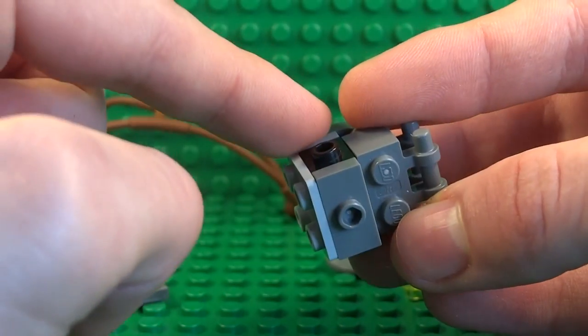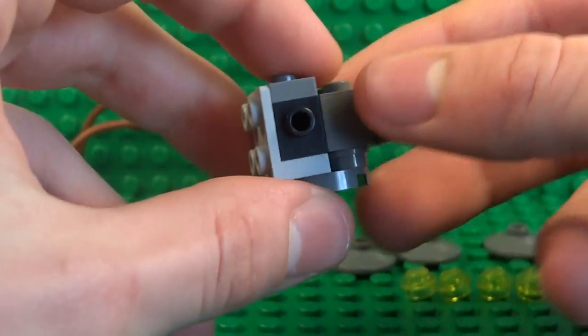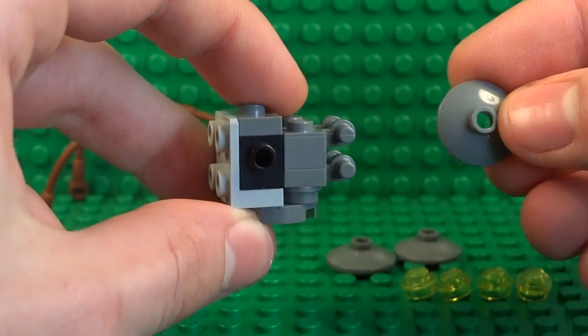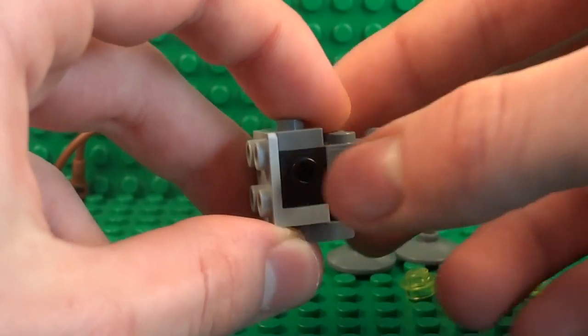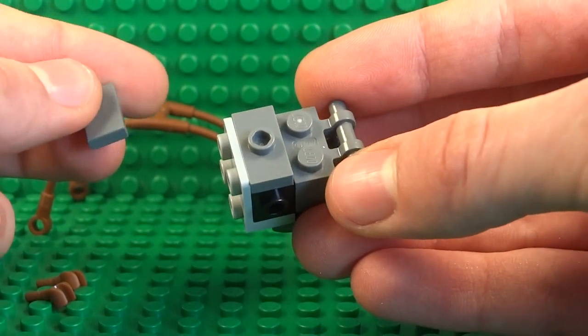And what these three studs will allow us is to stick some of these dish pieces on later on in the build and give some shape to the head and make it seem more like a diving suit.